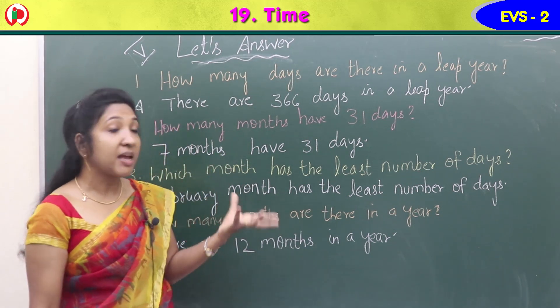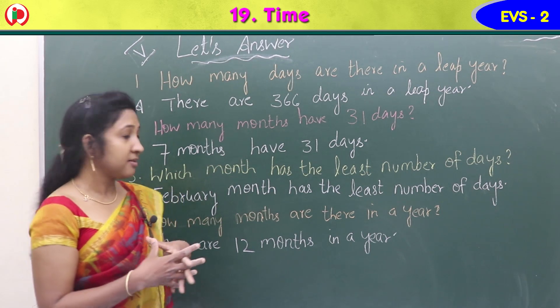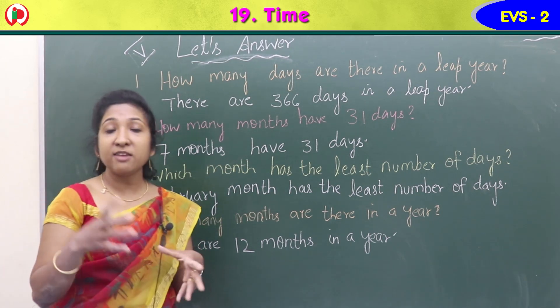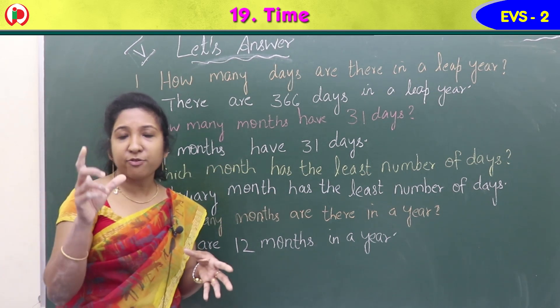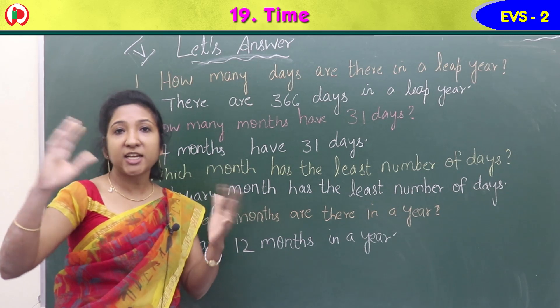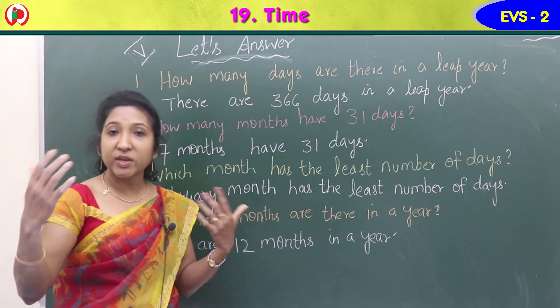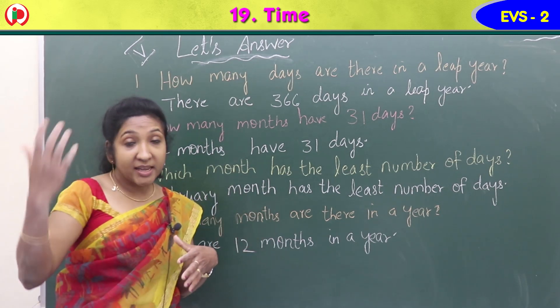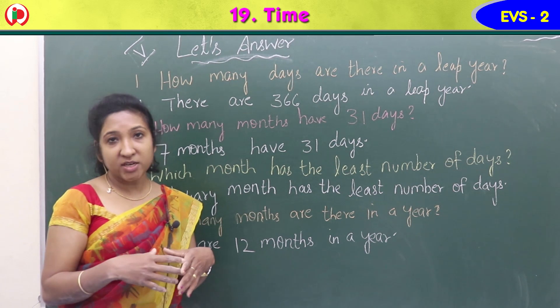Third question: which month has the least number of days? Only in February we have fewer days. Other months are 30 or 31 days, but February has only 28 days, or 29 days in a leap year. So February has the least number of days.